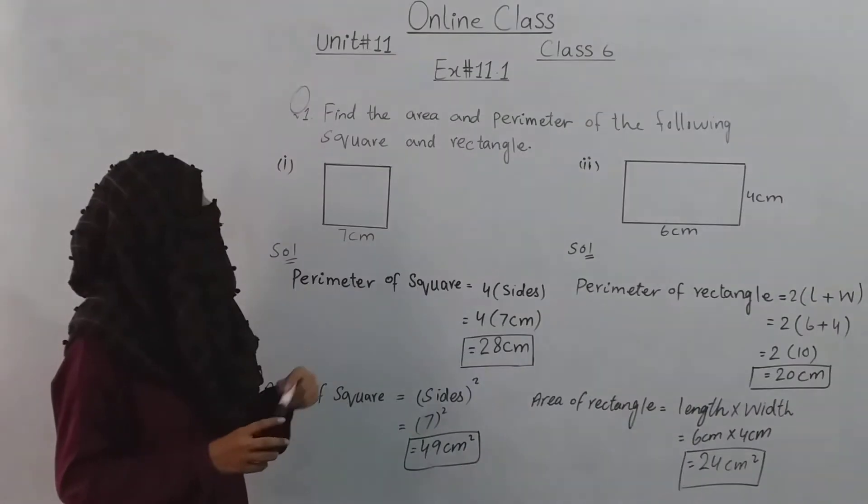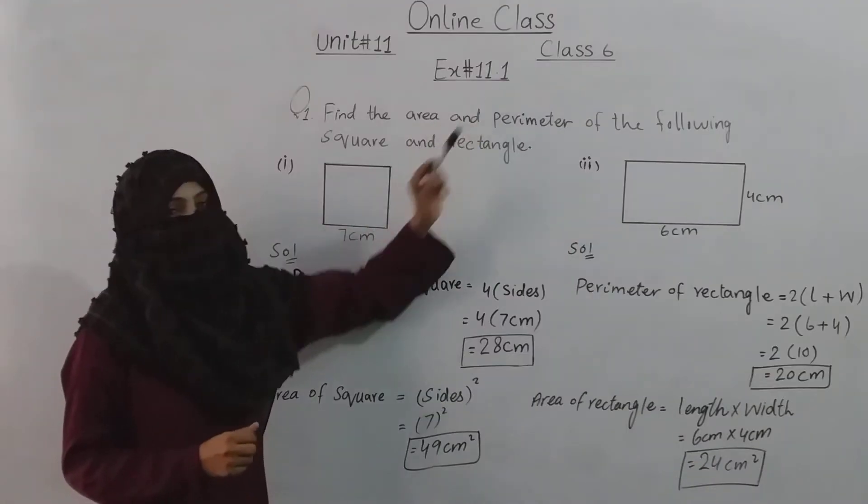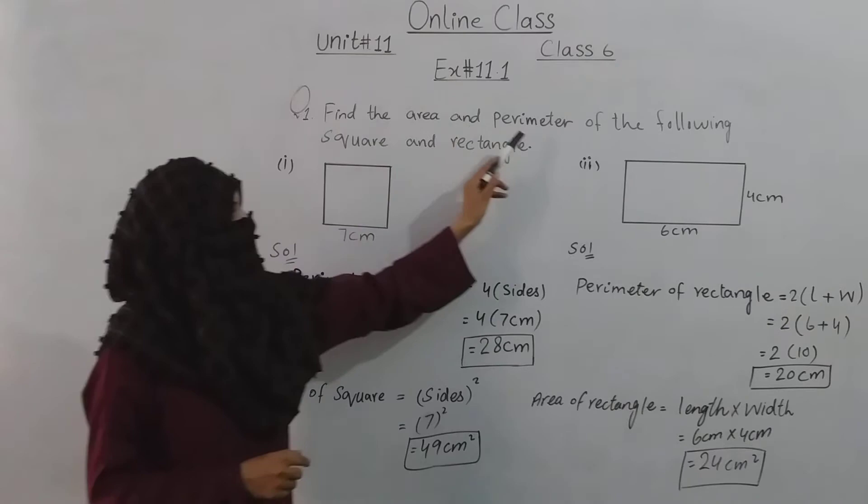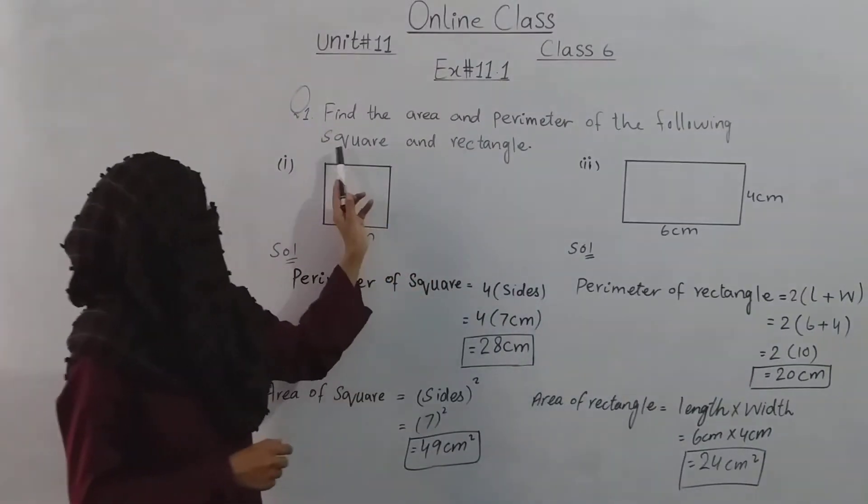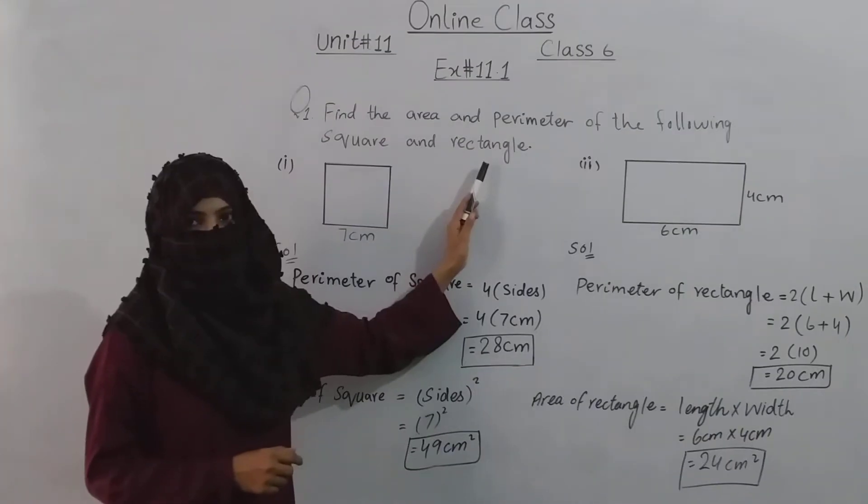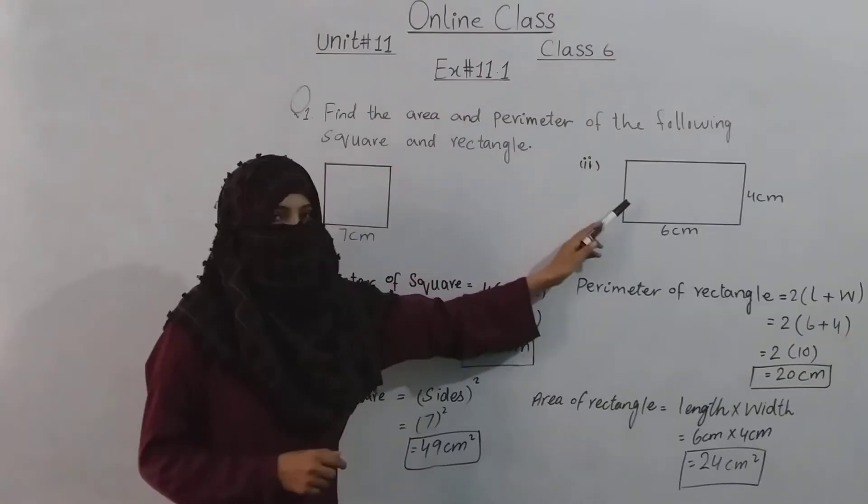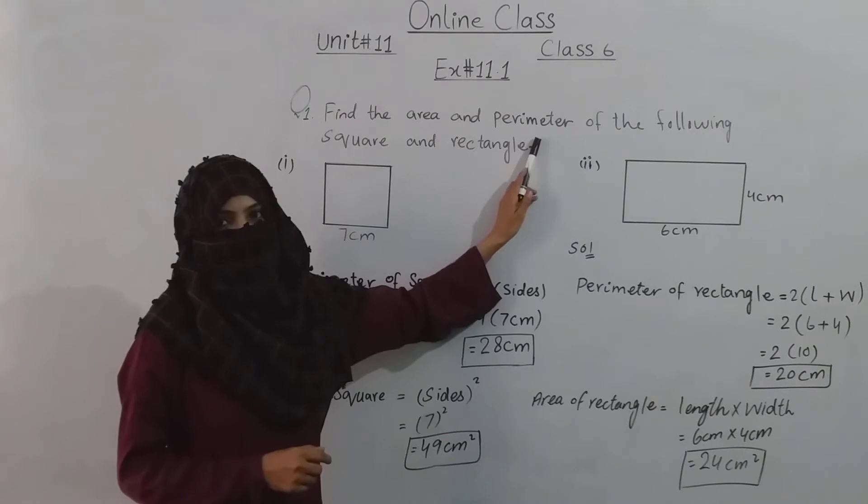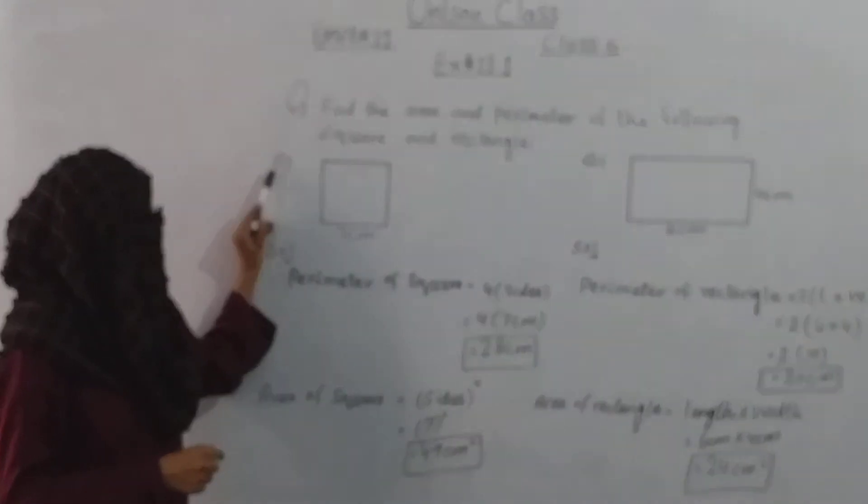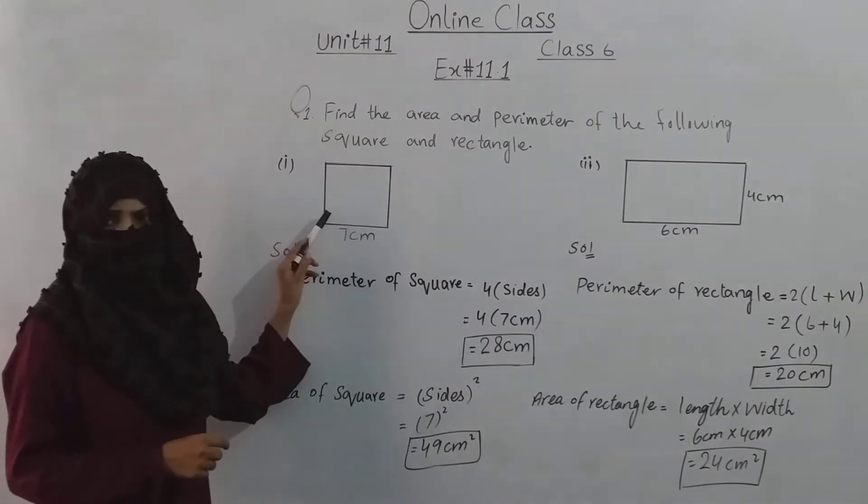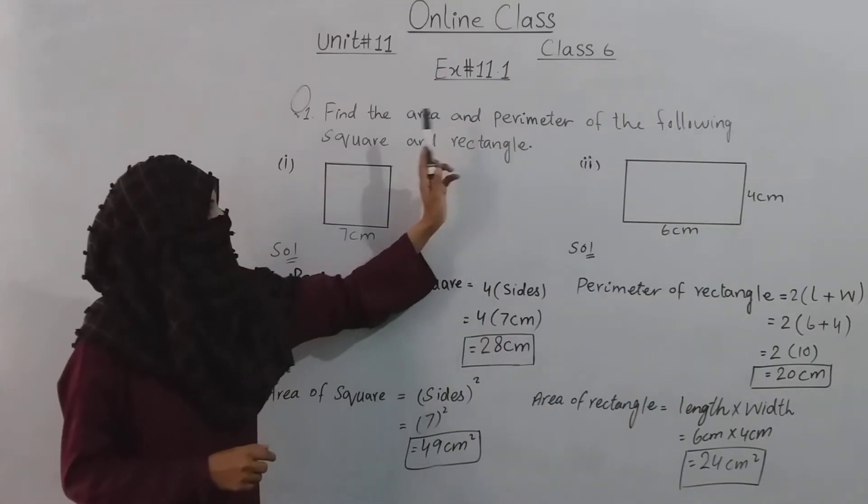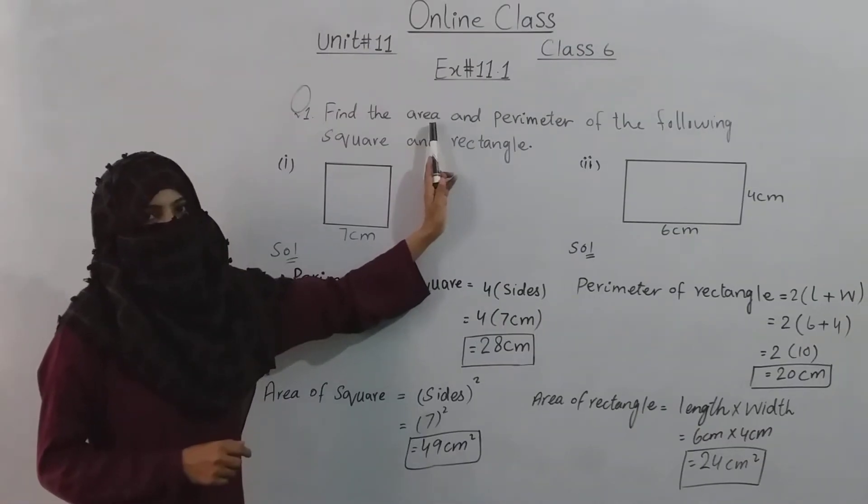Today we will do question number 1 of exercise 11.1. Find the area and perimeter of the following square and rectangle. You have a square shape and a rectangle shape. You need to find their area and perimeter. First part is the square shape. You need to find both the perimeter and area of the square.